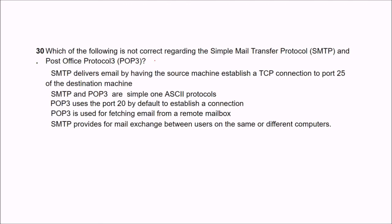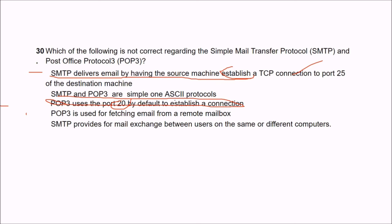Question 30: which of the following is not correct regarding SMTP and POP3? The answer is C — the statement that POP3 uses port 20 by default to establish a connection is incorrect. SMTP delivers email by having the source machine establish a TCP connection to port 25 at the destination. POP3 does not use port 20 by default.